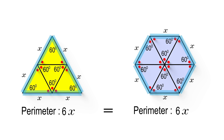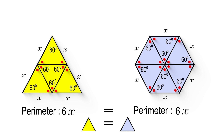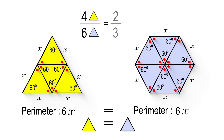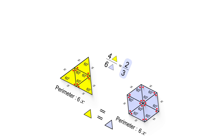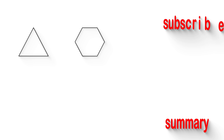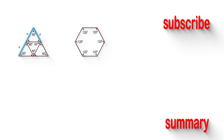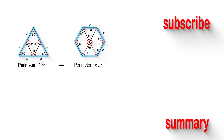Now if we take a closer look at these painted triangles, we note that all of them are congruent. From this, if we count the congruent triangles placed in the larger triangle and in the hexagon, we can write the following ratio of areas. So 2 over 3 will be the solution.